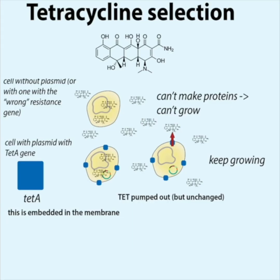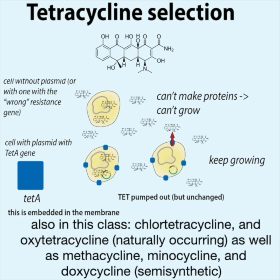With tetracycline selection, you are just pumping out the antibiotic as it gets into the cells. So you're not going on the offensive or modifying it — you're just kicking it out. Also in this class are chlorotetracycline and oxytetracycline, which are naturally occurring, as well as methacycline, minocycline, and doxycycline, which are semisynthetic.